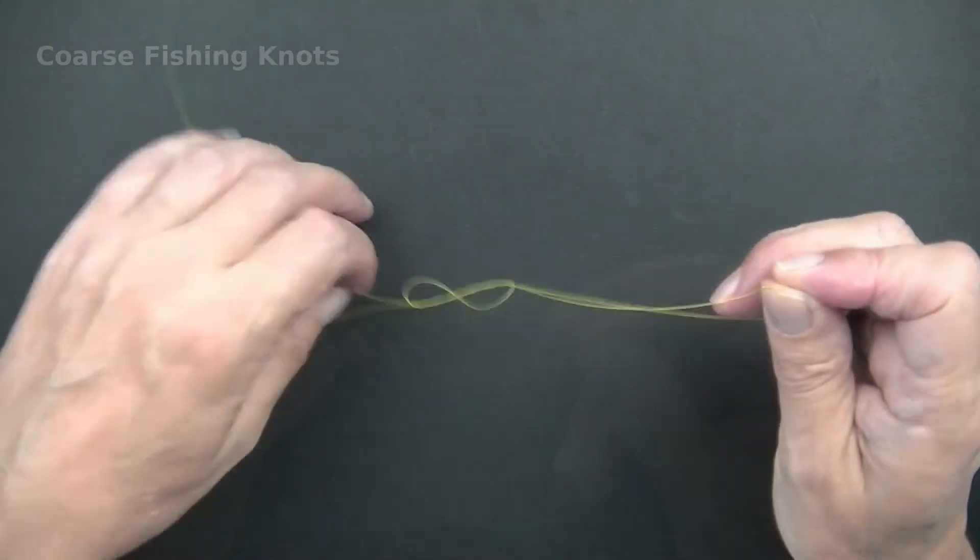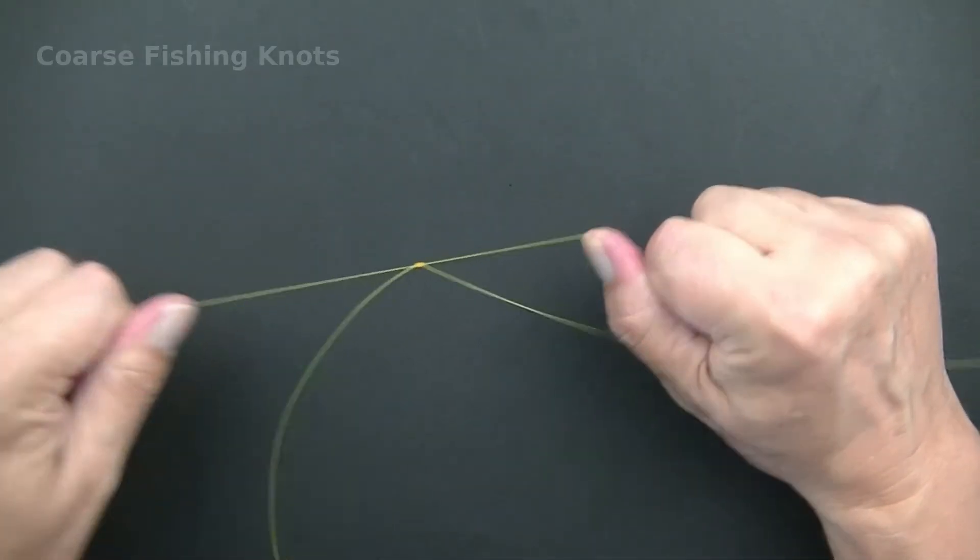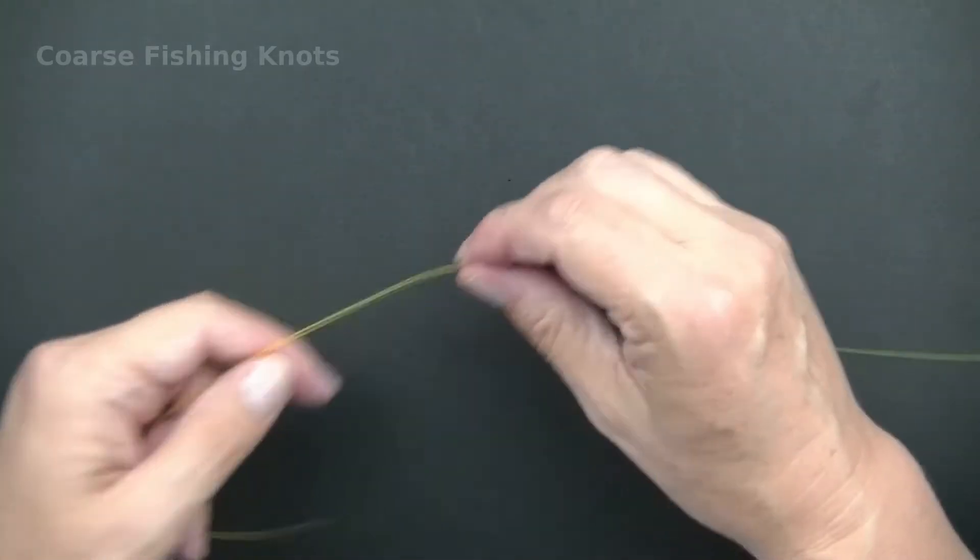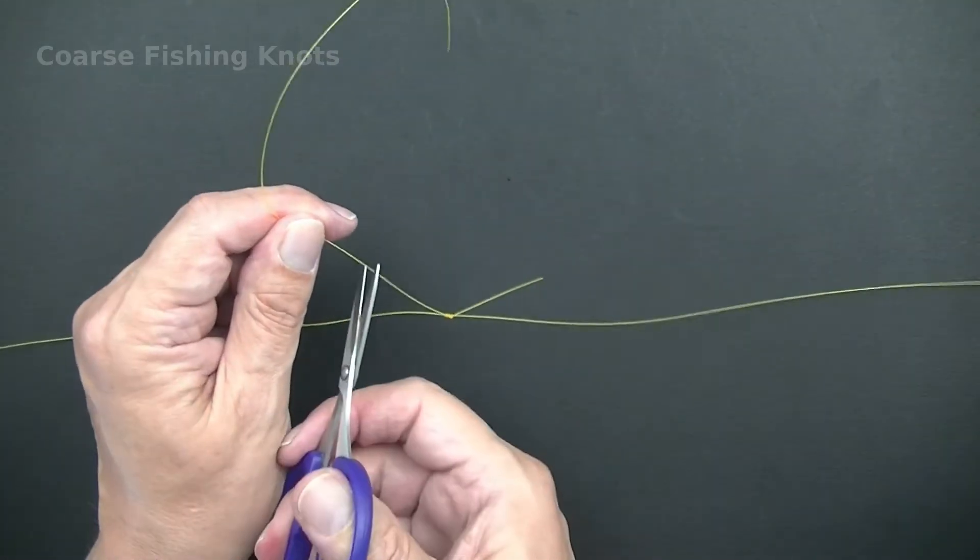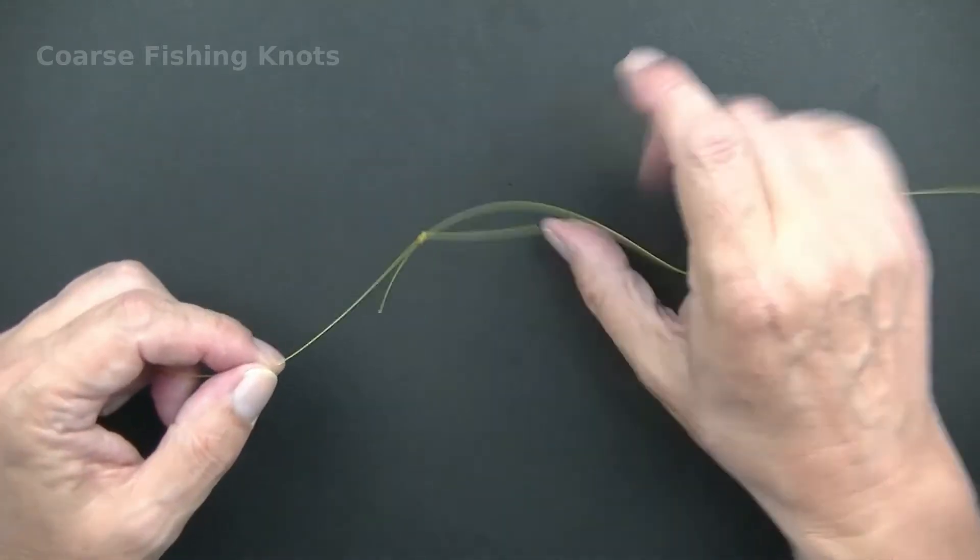A stop knot will not damage the line or catch on the rod rings while casting out. Sliding stop knots are most associated with deep water float fishing but also have uses in light ledgering and pike fishing.